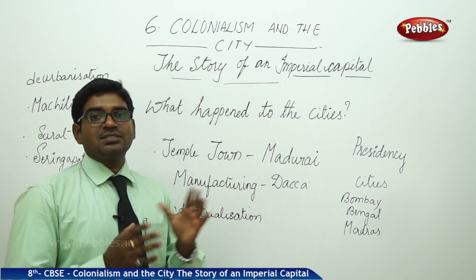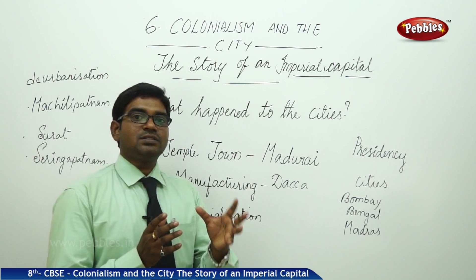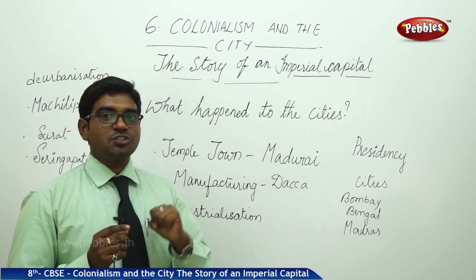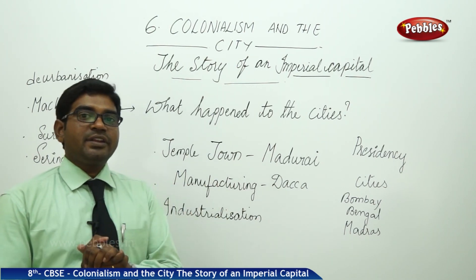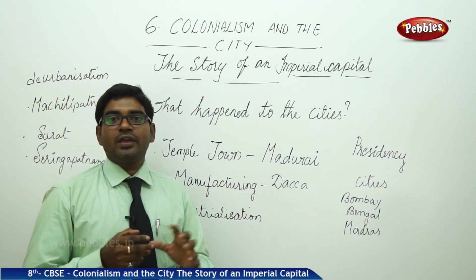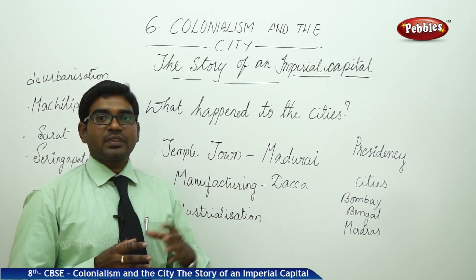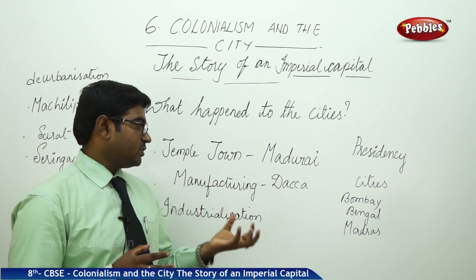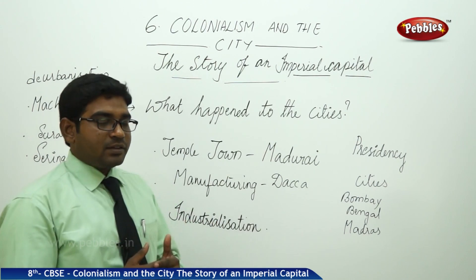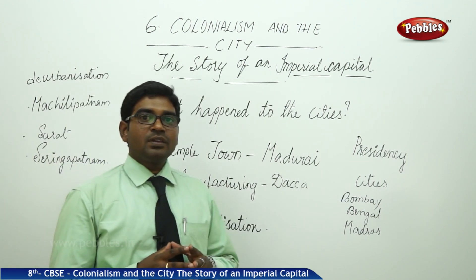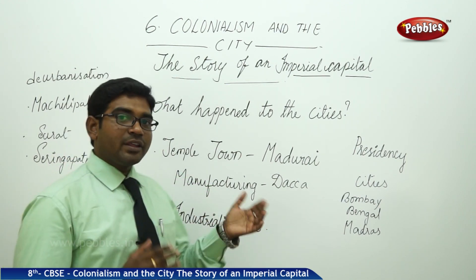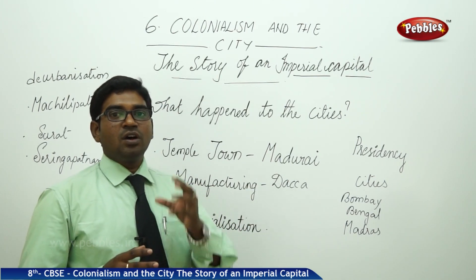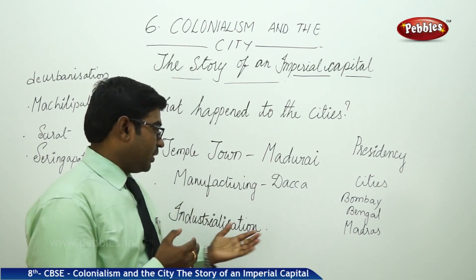Coming to the western side, European towns and cities emerged because of industrialization which happened from 1718 to 1820, where many industries were established and people moved close to those areas making these regions more crowded. In the late 19th century, cities on the western side emerged as capital cities or important trade towns due to industrialization.